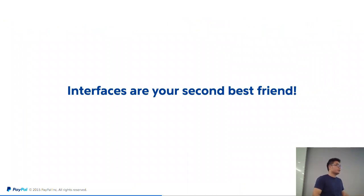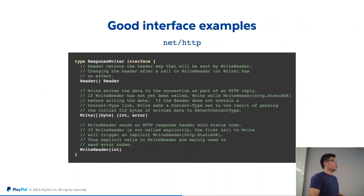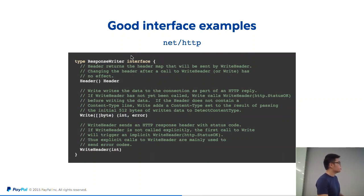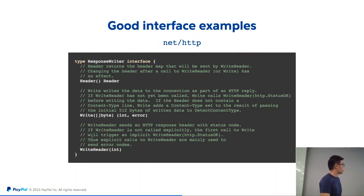Interfaces are your second best friend. Remember, dependency injection is your first best friend, and they always go side by side. If you are writing code in Go, Java, or C++ and you don't have those things, your code is not testable. In Go especially, interfaces are not avoidable. For example, in the net/http package we have ResponseWriter, which is an interface with all these methods. In your test, if you are writing a web app in Go, you don't need to create an entire server and make real HTTP requests — you can just mock the ResponseWriter. This is exactly what the http/httptest package does.